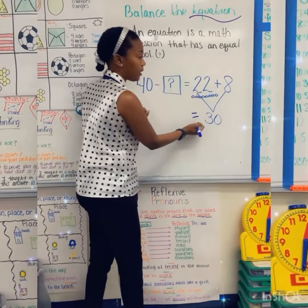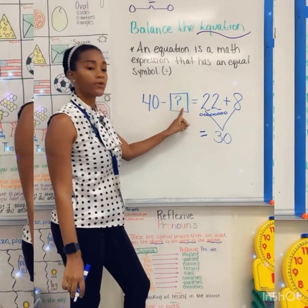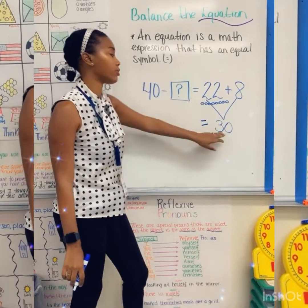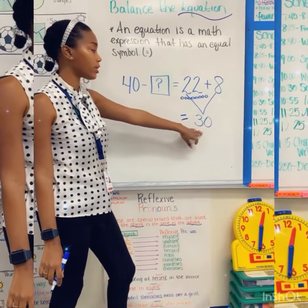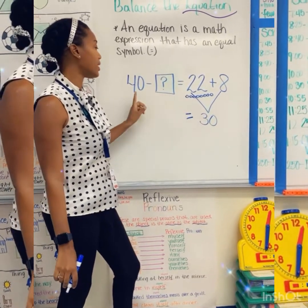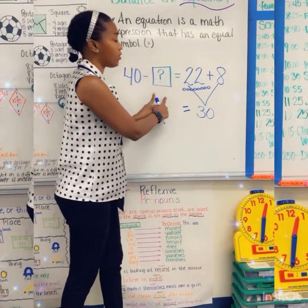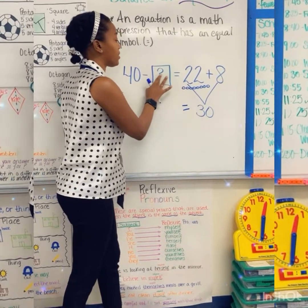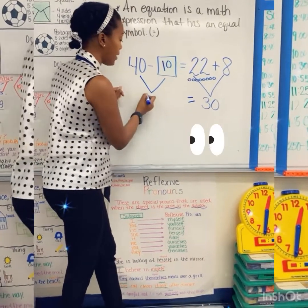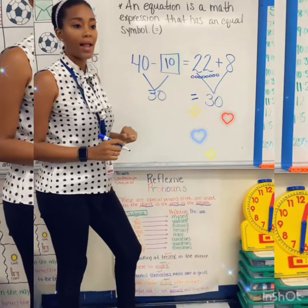I'm going to put my equal sign back right here. Now we have to figure out how to solve for the unknown number on this side of the equation. I know that my answer has to equal 30 because this side of the equation is equal to 30. One thing I know about 30 is if I have 30 and I add on 10 more, that's going to equal 40. So if I have 40 minus an unknown number, that unknown number is 10, because 40 minus 10 is equal to 30. 30 is equal to 30. So we have now balanced the equation.